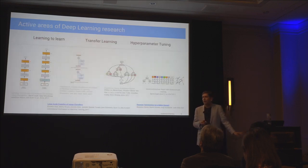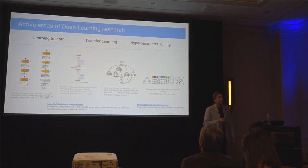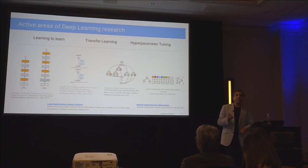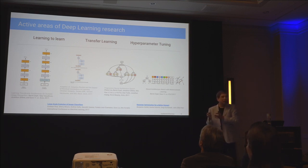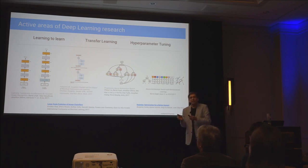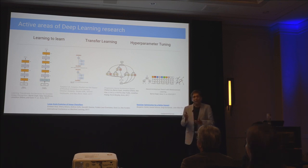At Google, we are doing active research in deep learning — this is by no means a solved problem. We're working on learning to learn and transfer learning, where you take a model trained on one problem and transfer it to another without starting from scratch with lots of data. For example, when we take Google Home into a new country, you can transfer-learn the language of that country without starting from scratch. We're also working on hyperparameter tuning and so forth.